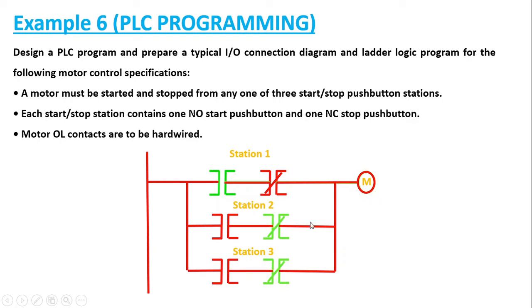Now let's say we start from station 2. Once the station 2 start push button is energized, the entire rung gets energized, there is a connection from input to output, and the motor starts rotating from station 2. Now if I press the stop push button from station 2, it becomes open circuited — it was normally closed initially — and the motor gets de-energized, the rung gets de-energized as well, and the motor stops rotating.